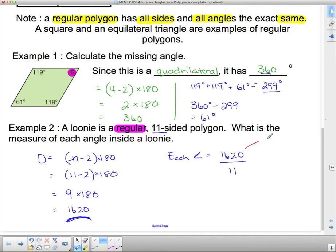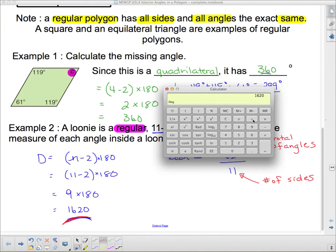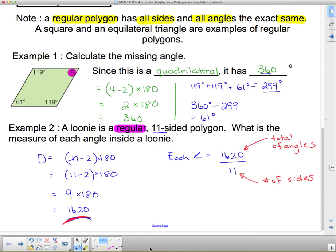This is the total of angles from over here, and it's being divided by the number of sides. And you are going to use this any time you're talking about a specific angle in a regular polygon. So we're going to divide this by 11, and we get approximately 147.3 degrees in each angle.